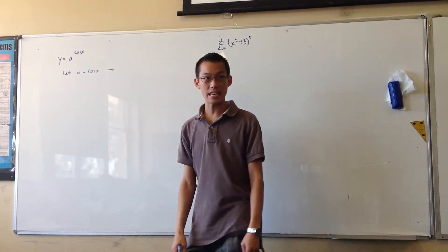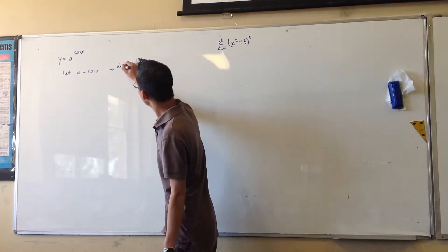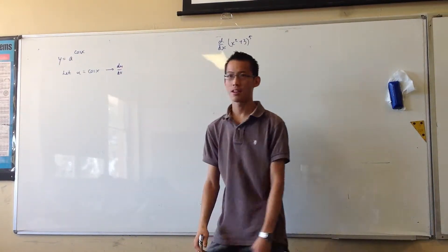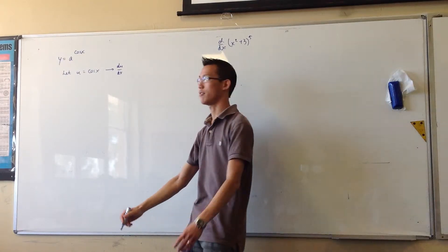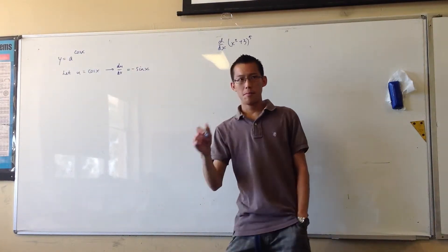First, we'll differentiate the inside function, so u, so du/dx. Cos turns into minus sine. You've done the inside,